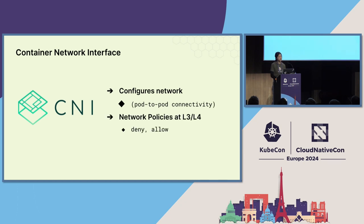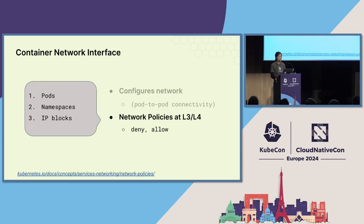There's usually some way to support network policies at L4 and L3. Network policies allow you to deny or allow certain traffic depending on IP address and port level. Pods can be identified — who they can communicate with — with these identities: pods, namespaces, IP blocks. And they can be used individually or in conjunction.